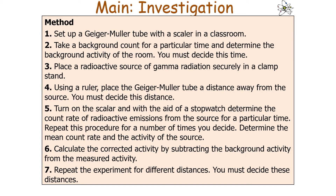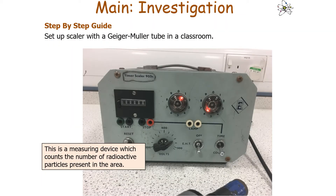To carry out the investigation, set up a Geiger-Müller tube with a scalar in a classroom. Take a background count for a particular time and determine the background activity of the room before placing the radioactive source. Place the gamma source securely in a clamp stand, then position the Geiger-Müller tube a chosen distance away. Turn on the scalar and use a stopwatch to determine the count rate. Repeat this procedure, calculate the mean count rate, then subtract the background activity to get the corrected activity. Repeat for different distances.